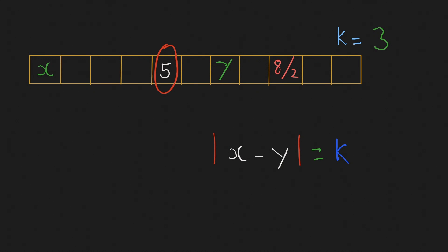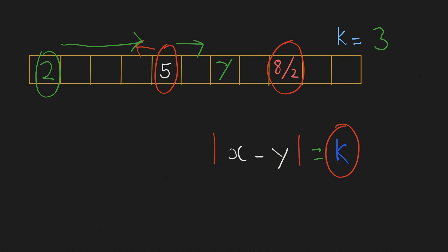Some of you may wonder why we are not looking at values to the left and only to the right. Since we are looking at both the greater and smaller value with the difference of k, when we start from 2 we will be looking for a value of 5, so that case is also covered. Similarly, if we start from 8, we look at 8 minus 3, so that value is also covered. We don't have to look left.